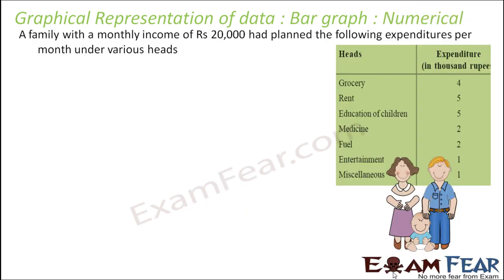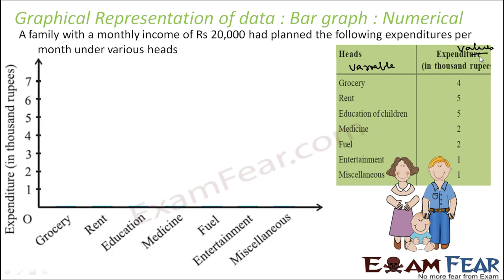Let's take another example. A family with a monthly income of 20,000 rupees has planned expenditures: Grocery 4,000; Rent 5,000; Education 5,000; Medicine 2,000; Fuel 2,000; Entertainment 2,000; and Miscellaneous 1,000 — totaling 20,000. We need to represent this in a bar graph. The variable — expenditure heads — goes on the x-axis; the values go on the y-axis, ranging from 1 to 5.